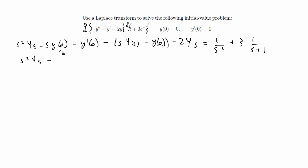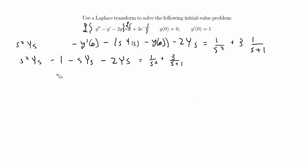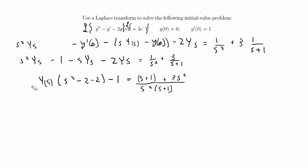Simplifying the left hand side: we have s squared·Y(s) minus s times y(0), which is 0, so we can ignore that. Minus y'(0), which is 1, so minus 1. Then distributing the negative sign: minus s·Y(s) plus y(0) — again that's 0 — minus 2·Y(s) equals 1 over s squared plus 3 over s plus 1. Pulling out Y(s), that's times s squared minus s minus 2, and we still have the minus 1.